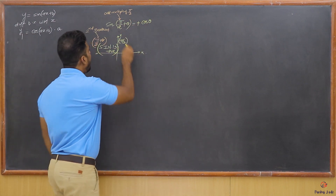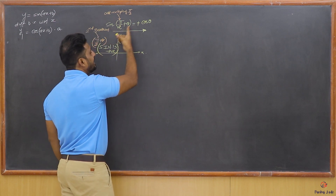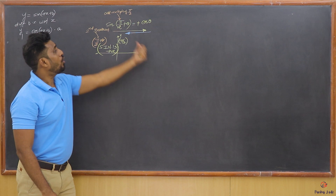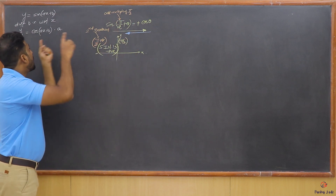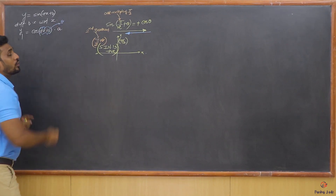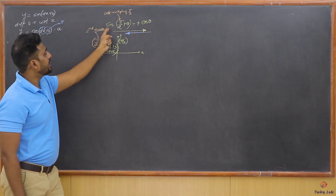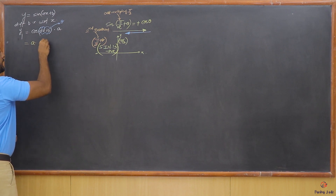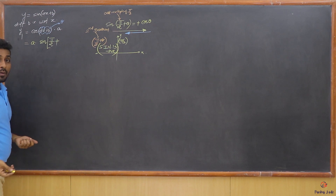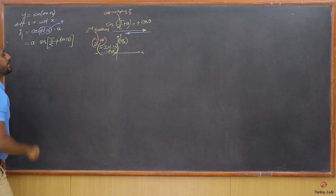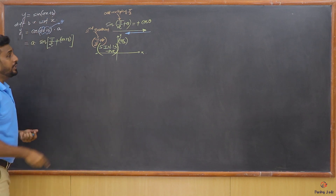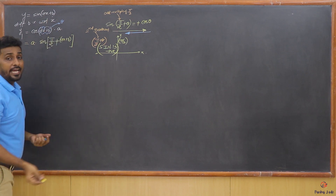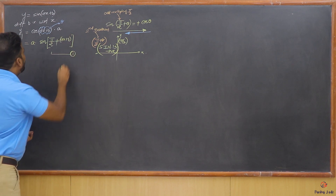Reading right to left: cos θ = sin(π/2 + θ). Calling ax + b as θ, we can rewrite y1. Since y1 = a · cos(ax + b), and cos θ = sin(π/2 + θ), we get y1 = a · sin(π/2 + ax + b). Now both y and y1 use the same trigonometric ratio — sine — making generalization possible. This is the first relation.